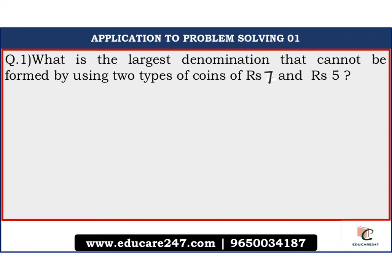Let us now have a look at the questions, the application to the problem solving. The question says what is the largest denomination that cannot be formed by using two types of coins of rupees 7 and rupees 5? We know the formula for this. Just apply the chicken mcnugget or postage stamp theorem a into b minus a minus b. Here a equals 7, b equals 5. So 7 into 5 minus 7 minus 5, which is 35 minus 12.